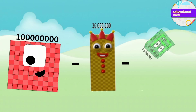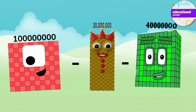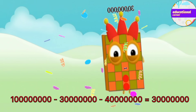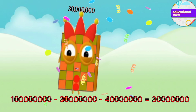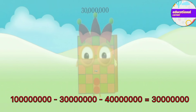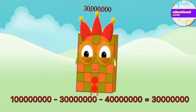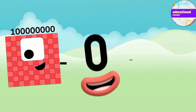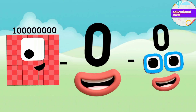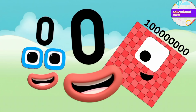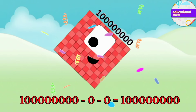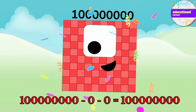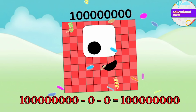100,000,000 minus 30,000,000 minus 40,000,000 equals 30,000,000. 100,000,000 minus 0 minus 0 equals 100,000,000.